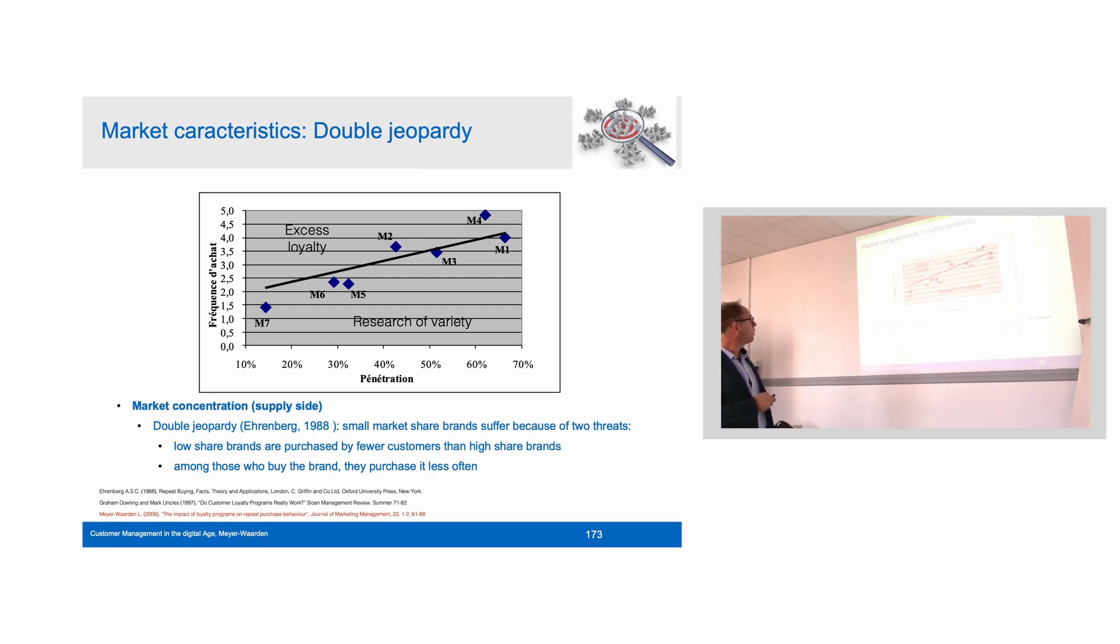This is what you can see actually in this framework. You can see here different brands, the seven stores we have seen already in the study about loyalty programs. You see here the penetration, which means the number of buyers. The bigger stores, Carrefour for example and Casino, are leader brands. They have more buyers, and these buyers buy more often. Purchase frequency. Small brands, such as Super U, have less buyers, and these buyers buy less often. This can be explained by double jeopardy.